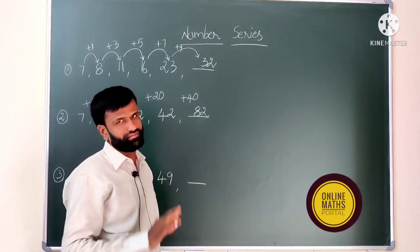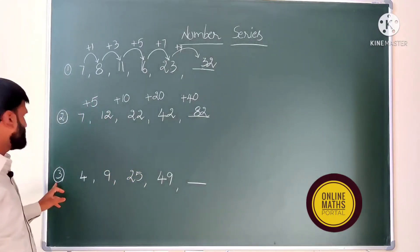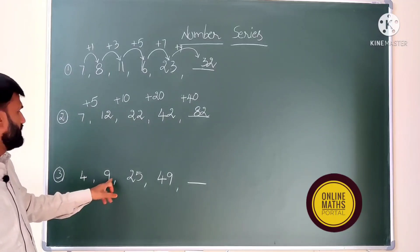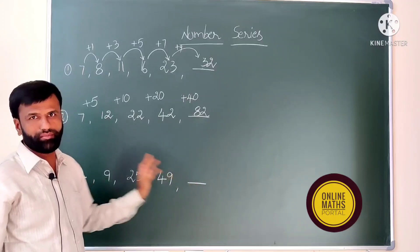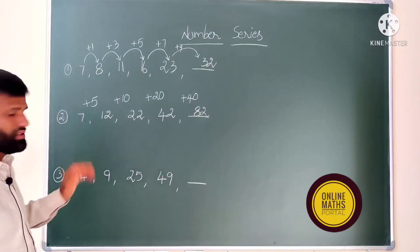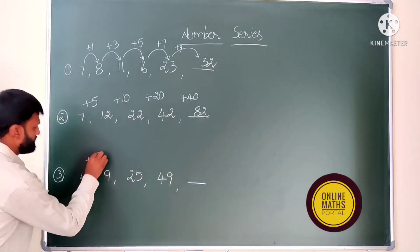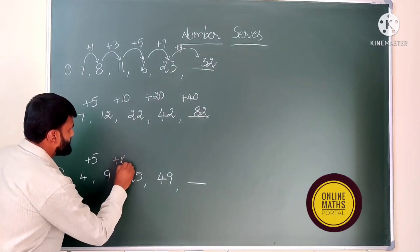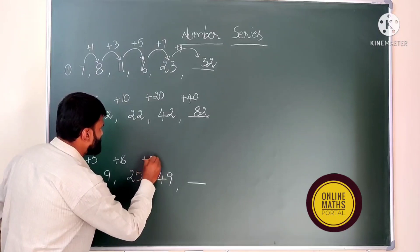If we don't check carefully, we will lose marks, so don't do that. Now we will see the third question: 4, 9, 25, 49 — find the required number. The distance is also very small, so we will see the difference. 4 to 9 is plus 5, 9 to 25 is plus 16, 25 to 49 is plus 24.